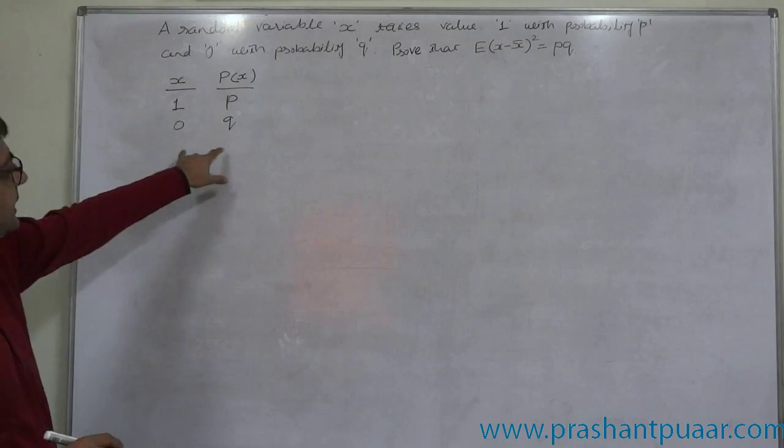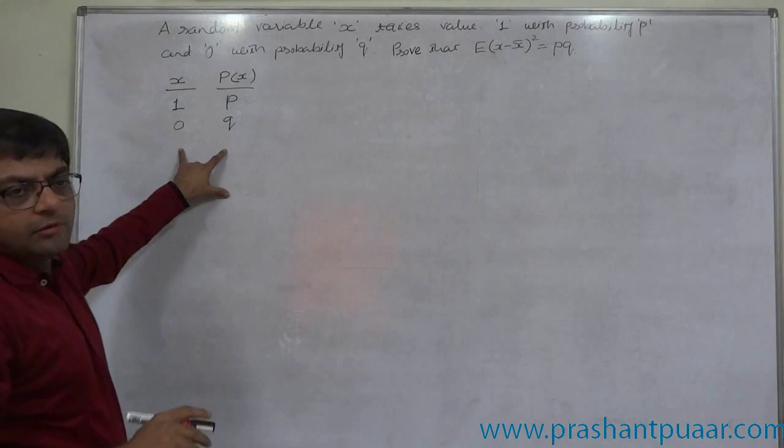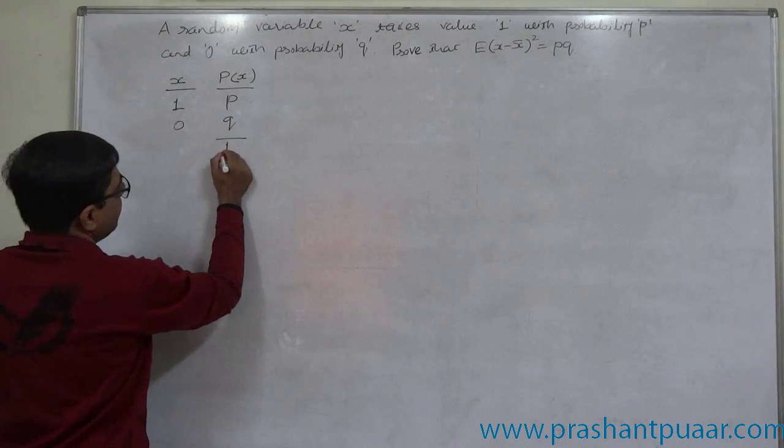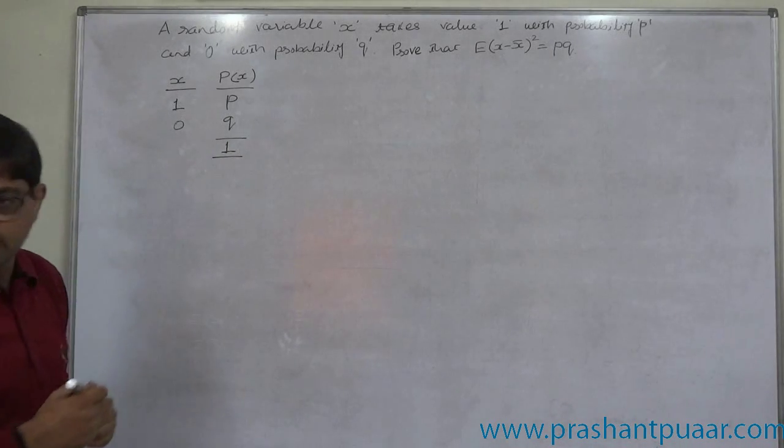We know that in any complete or valid probability distribution the summation of probability is always 1 and we know that P plus Q is always 1.